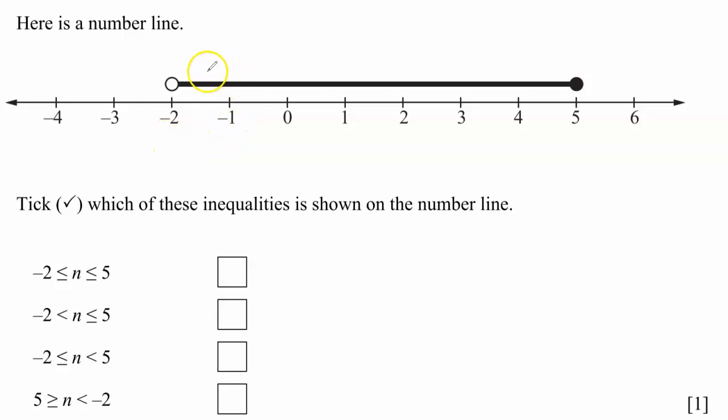So, for example, for the greater than or equal to, the circle is shaded and the arrow points to the right. For less than or equal to, the circle is going to be shaded and the arrow is going to point left.